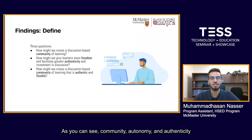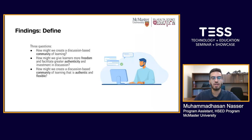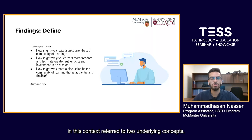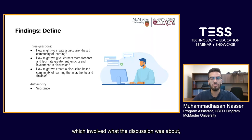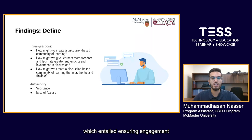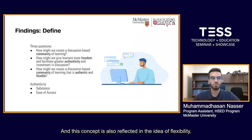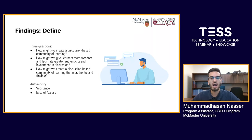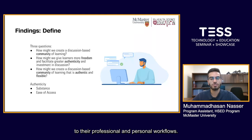As you can see, community, autonomy, and authenticity emerged as major challenges and opportunities for learners when it came to online discussion activities. It's also important to note that authenticity in this context referred to two underlying concepts: authenticity in the substance of a discussion — what the discussion was about, including the relevance of content to the learner's professional and academic activities — and authenticity in the modality of discussion, ensuring engagement was done in an organic way. This concept is also reflected in the idea of flexibility, as discussion options should be easily accessible and authentic to learners' professional and personal workflows.